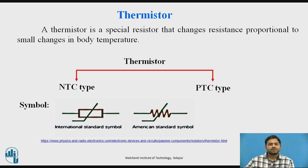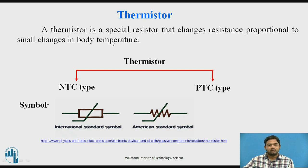What is meant by a thermistor? The name thermistor is derived from 'therm' and 'resistor' — meaning it is a thermal resistor. A thermistor is a special type of resistor which changes its resistance proportionally to the input body temperature. Thermistors are of two types: NTC type and PTC type. NTC is negative temperature coefficient and PTC is positive temperature coefficient.